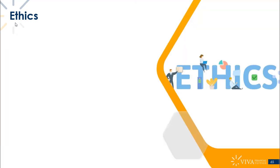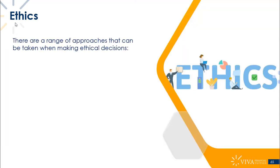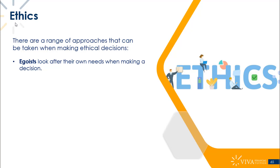There are a range of approaches that can be taken when making ethical decisions. We'll look briefly at a number of ethical positions from a philosophical perspective — not too deep into philosophy, but worth knowing these terms, as philosophies do underpin the kinds of actions organizations are willing to take. One ethical position is called egoism. Ethical egoists look after their own needs when making a decision and don't consider the needs of others.